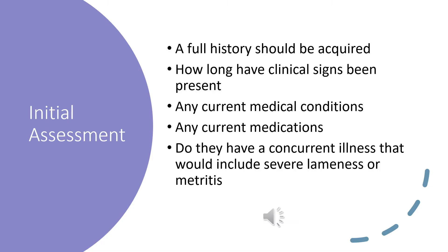In order to accurately assess whether a patient has laminitis, a full history of the animal needs to be acquired. The owner should be asked how long the clinical signs have been present, whether the animal has any current medical conditions or medications, and whether there is a concurrent illness causing this severe lameness — or, for example, if it is a mare that recently foaled and may be experiencing metritis.